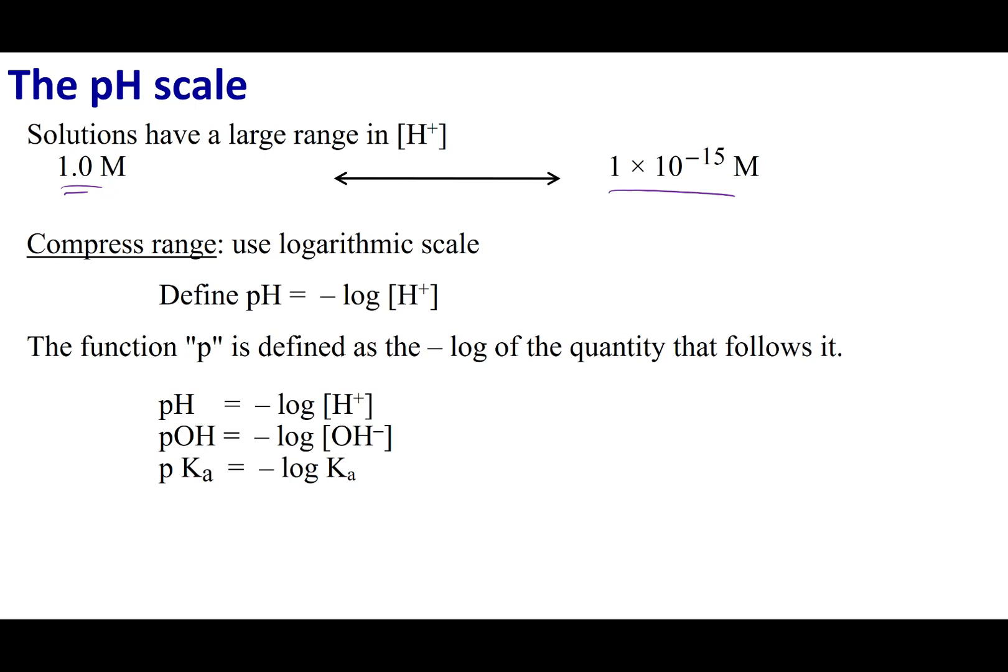To give you guys an idea how big this is, if you had $1, well, Jeff Bezos is a billionaire. And so billion means that he has nine zeros. So that would be 1 times 10 to the ninth. That's still not as big a difference as how much H plus concentrations can vary inside water.